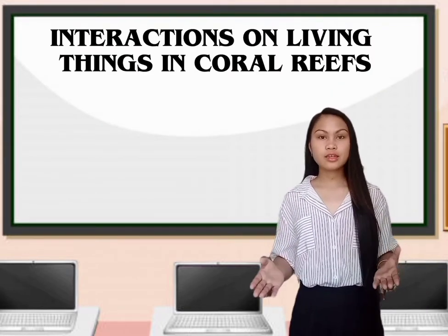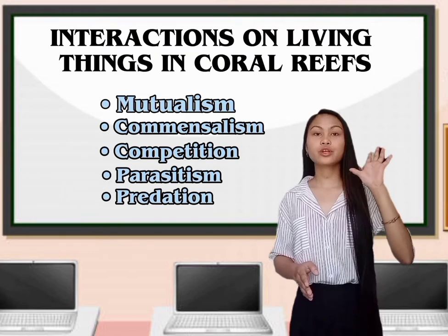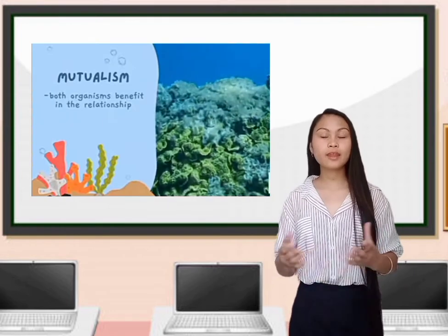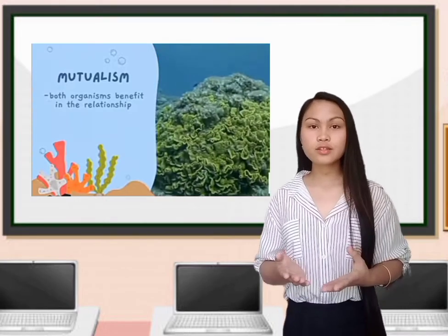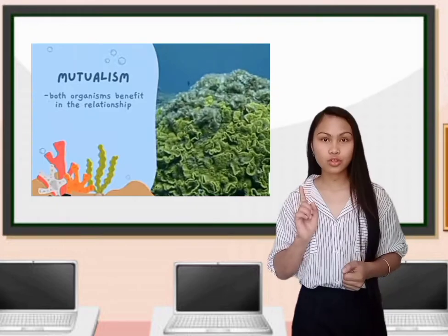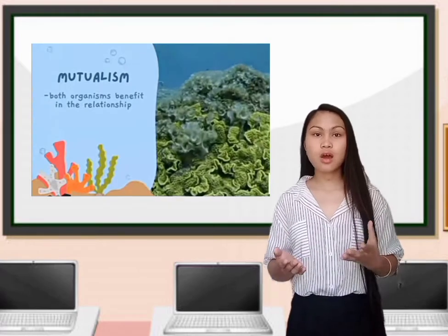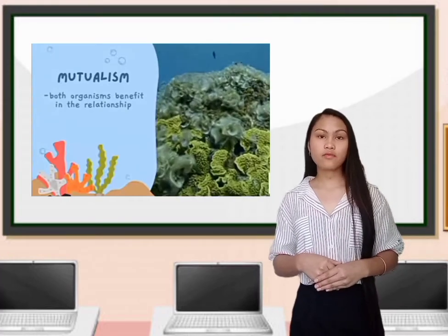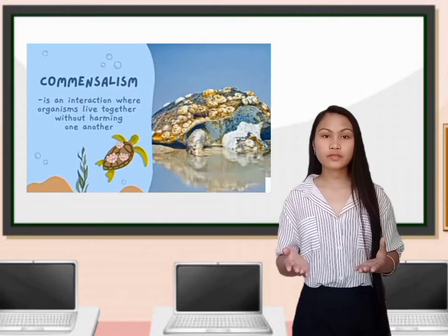There are interactions that exist in coral reef ecosystems, namely mutualism, commensalism, competition, parasitism, and predation. Mutualism is an interaction where both organisms benefit from their relationship. For example, tiny plant-like organisms called algae live in the body of the coral. The algae provide carbohydrates and oxygen to the corals through photosynthesis, while the corals provide a safe environment for the algae.